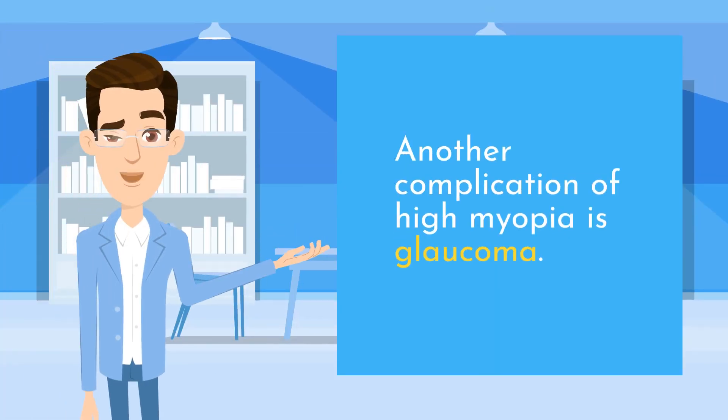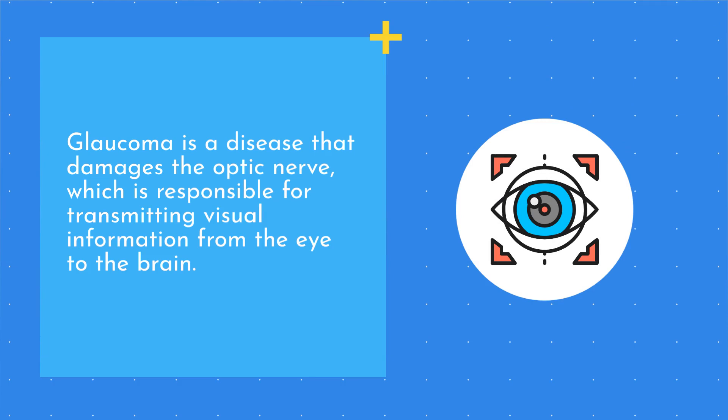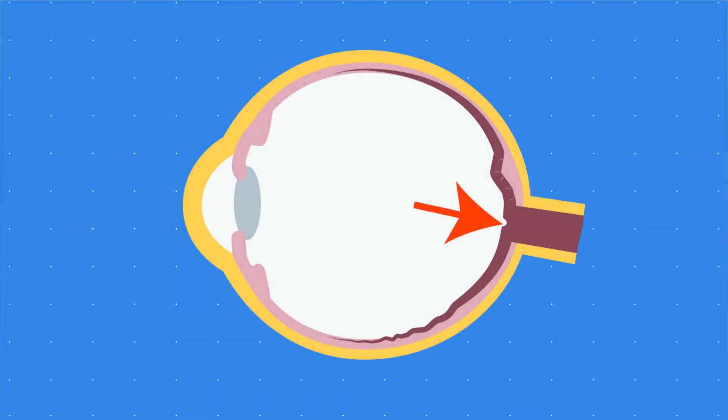Another complication of high myopia is glaucoma. Glaucoma is a disease that damages the optic nerve, which is responsible for transmitting visual information from the eye to the brain. In people with high myopia, the elongated shape of the eye can stress the optic nerve cells, leading to damage and vision loss.